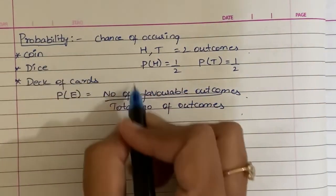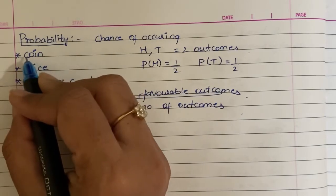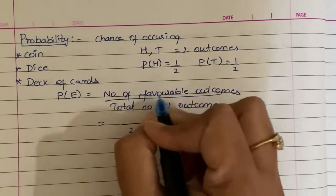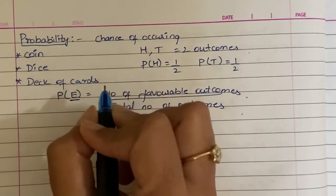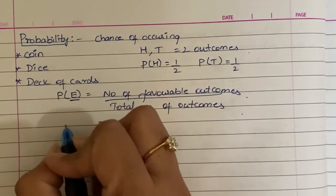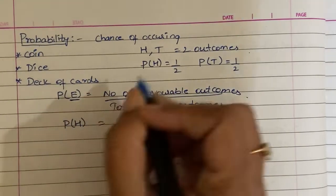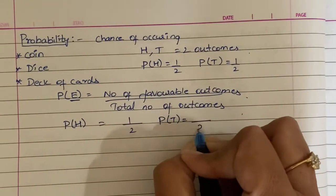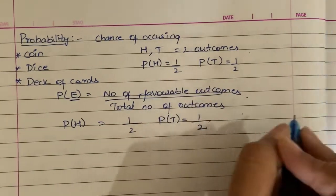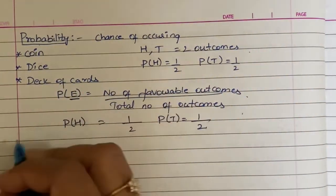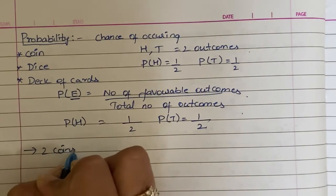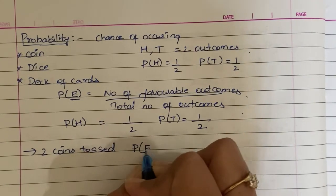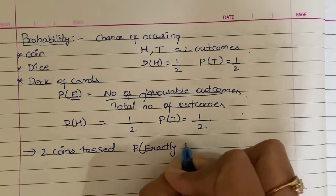Let's take a coin example. The total number of outcomes in a coin toss is 2 — head and tail. The probability of occurrence of head is 1 by 2, that is 50%. Similarly, the probability of tail is also 1 by 2, that is 50%. Now, if two coins are tossed, what is the probability of getting exactly one head?